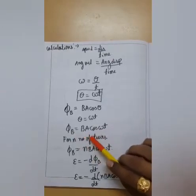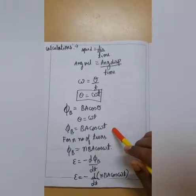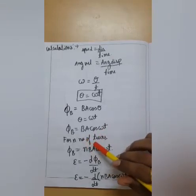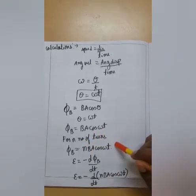Now we will be putting omega t. Now this becomes phi is equal to BA cos omega t. Obviously for n number of turns, it would become phi is equal to nBA cos omega t.